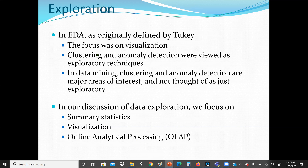With clustering, when we have similar data we group it together as one unit or cluster. When we have two different types of data, they will be in a different cluster. With anomaly detection, if there is any value that is too small or too large, or some behavior not common among the rest of the data, it will be detected. In data mining, clustering and anomaly detection are major areas of interest, and we will cover those algorithms in future lectures.